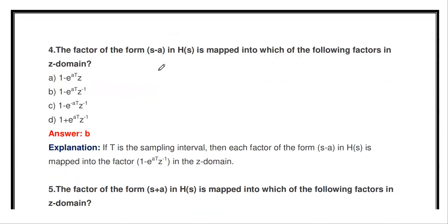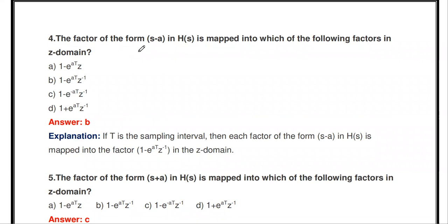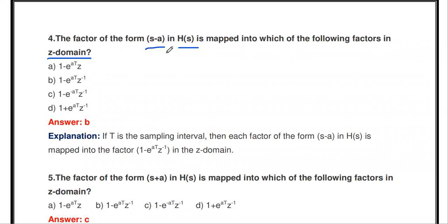The next question: the factor of the form (s − a) in H(s) is mapped into which of the following factors in the Z-domain? If H(s) has the term (s − a) in the denominator, that factor is mapped in the Z-domain to (1 − e^(aT) z^(−1)). So (s − a) is mapped to (1 − e^(aT) z^(−1)).